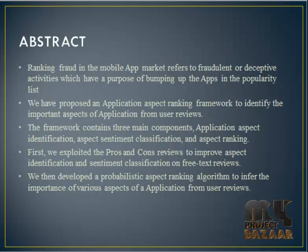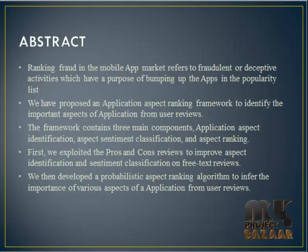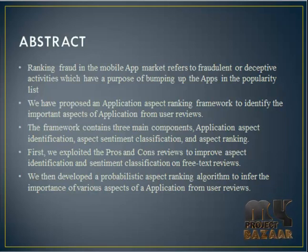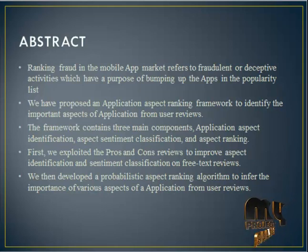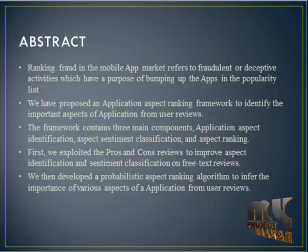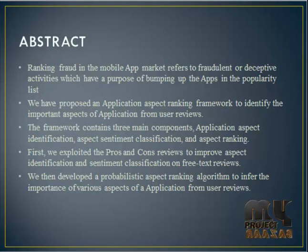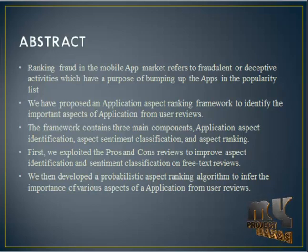So three processes: identification, classification, and ranking. First we exploited the pros and cons — that is, advantages and disadvantages reviews — to improve the aspect identification and sentiment classification on free text reviews. We then developed a probabilistic aspect ranking algorithm to infer the importance of various aspects of an application from user reviews.